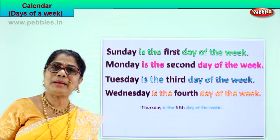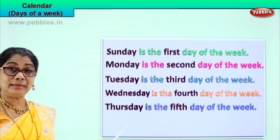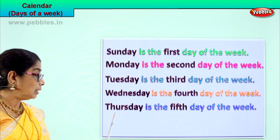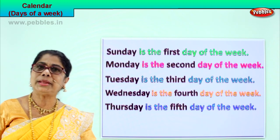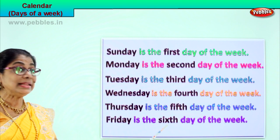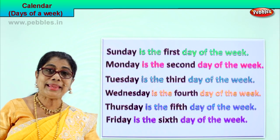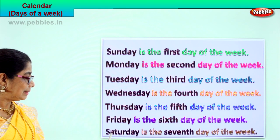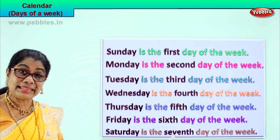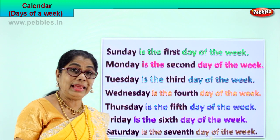Next, which is the fifth day? Thursday. Spell Thursday. T-H-U-R-S-D-A-Y. Thursday is the fifth day of the week. Spell fifth. F-I-F-T-H. Next, Friday. Spell Friday. F-R-I-D-A-Y. Friday is the sixth day of the week. Spell sixth. S-I-X-T-H. And the seventh — S-E-V-E-N-T-H — Saturday is the seventh day of the week.